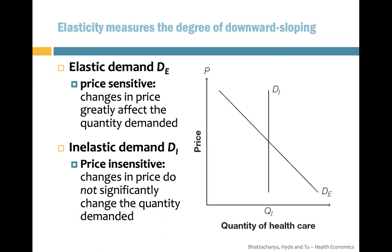There are two types of demand curves: elastic and inelastic. We can think of it as necessary and unnecessary. For very necessary things, even if the price increases and gets more expensive, you still need to buy it. That would be an inelastic demand curve, which is D1.